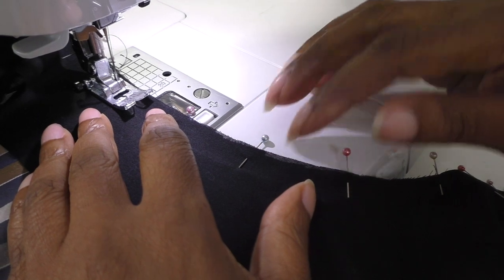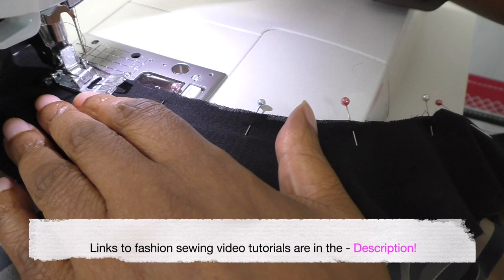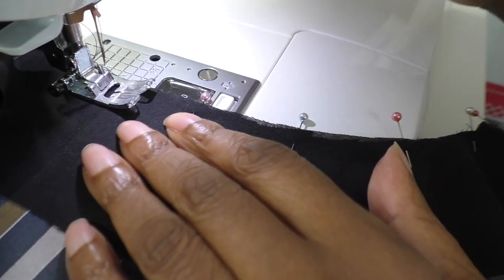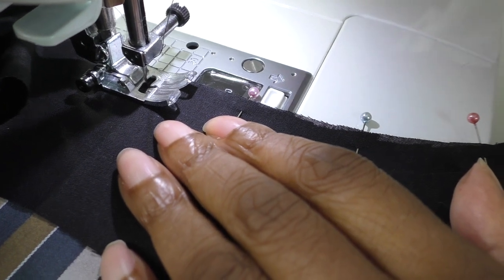I'm now ready to sew the facing to the curve. What I've done is I've lined it up to the center back seam, put the needle down, and I'm starting from the curve and working our way down the shirt.